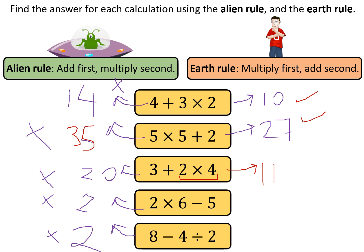So these are the correct answers. This next one: 2 times 6 is 12, subtract 5 and you get 7. This next one: we do the division first, so 4 divided by 2 is 2, then 8 subtract 2 is 6. BIDMAS forces us to have one possible answer.